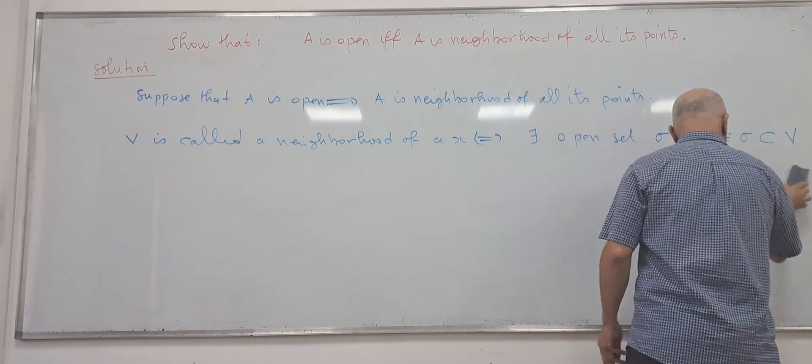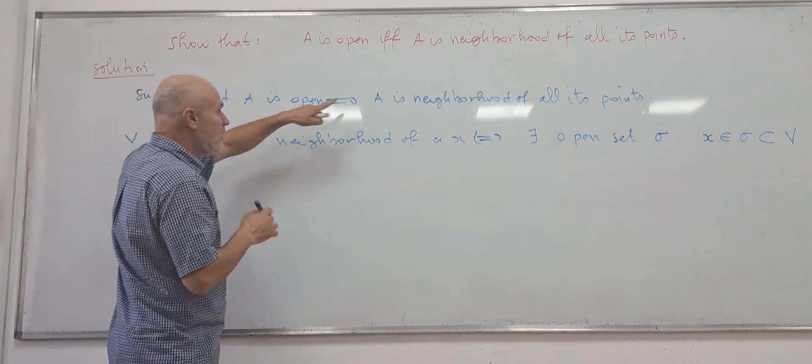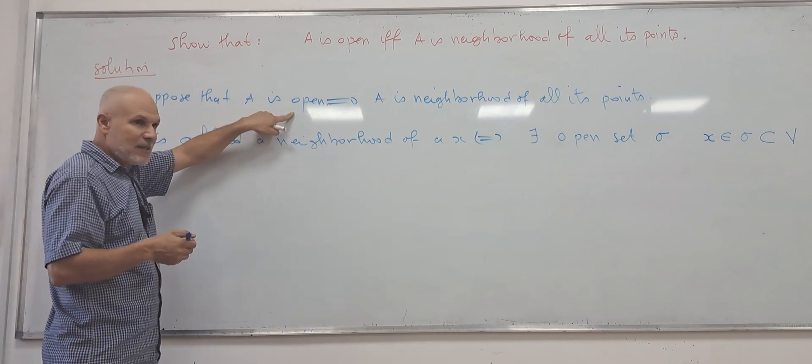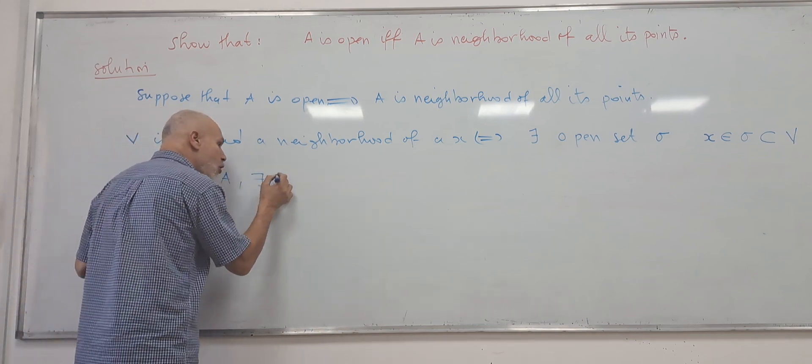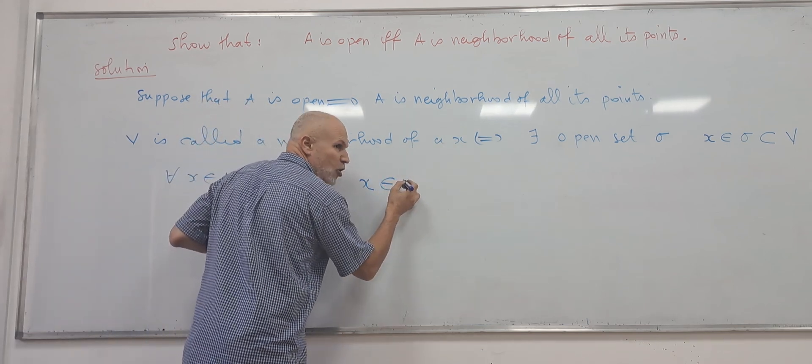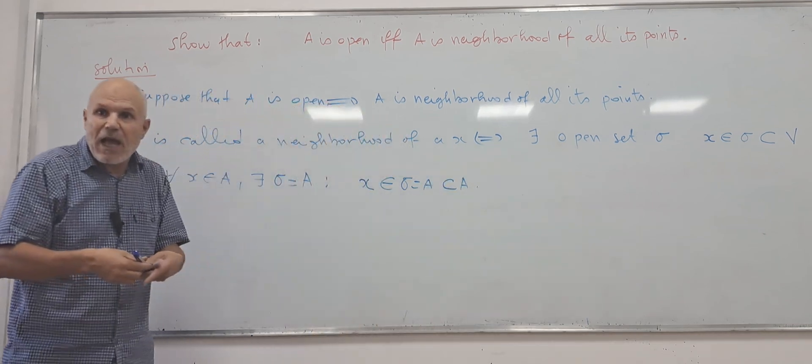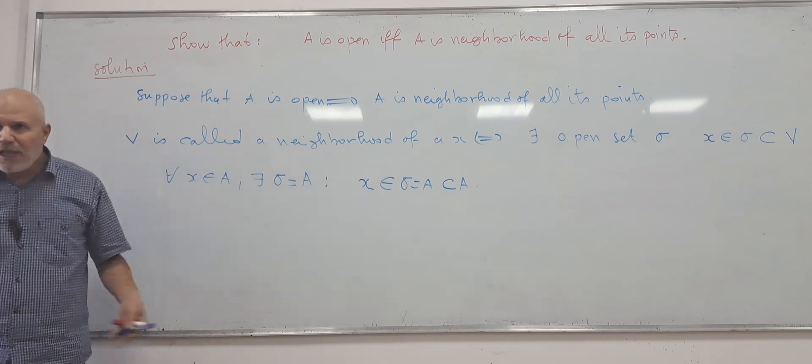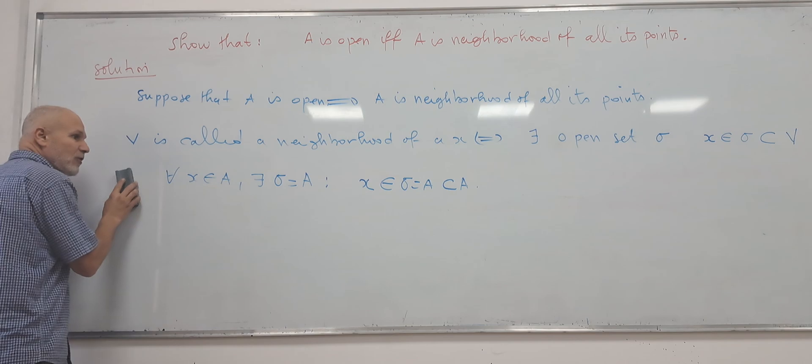Why? Because using the definition, we can find V which is A, which is an open. Suppose that A is open, so A is open. For any X from A, there exists an open O which is A itself, and this verifies X belongs to O which is A, and A belongs to itself. So A is a neighbor. We just apply the definition, just an easy application of the definition. The other sense is a little bit tricky.